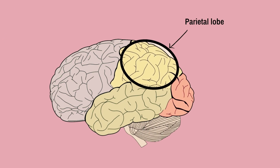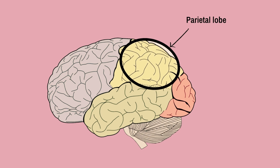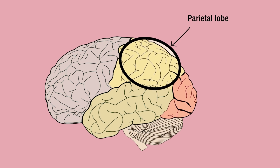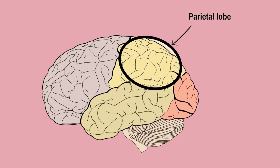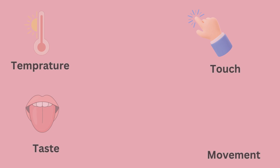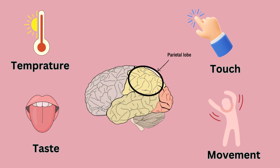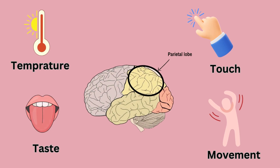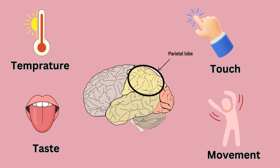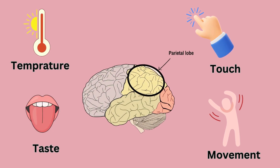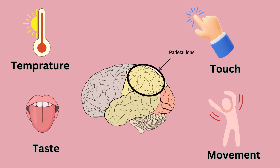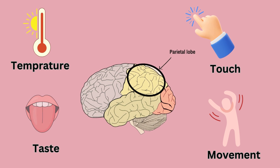Next is the parietal lobe. At the top and back of the brain, it processes information about temperature, taste, touch, and movement.